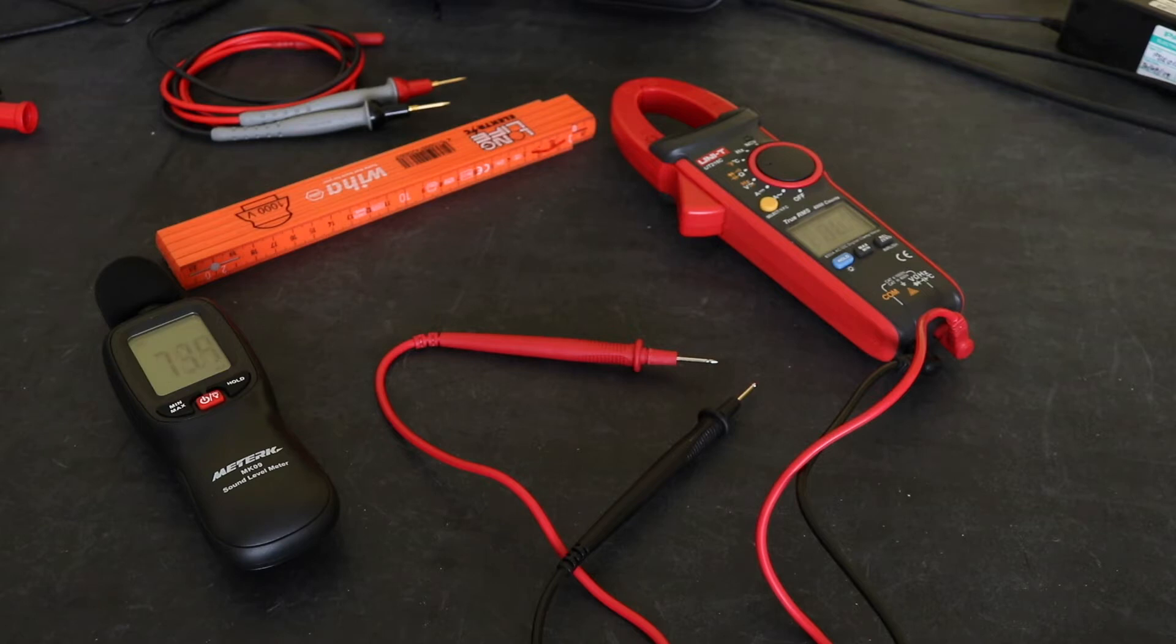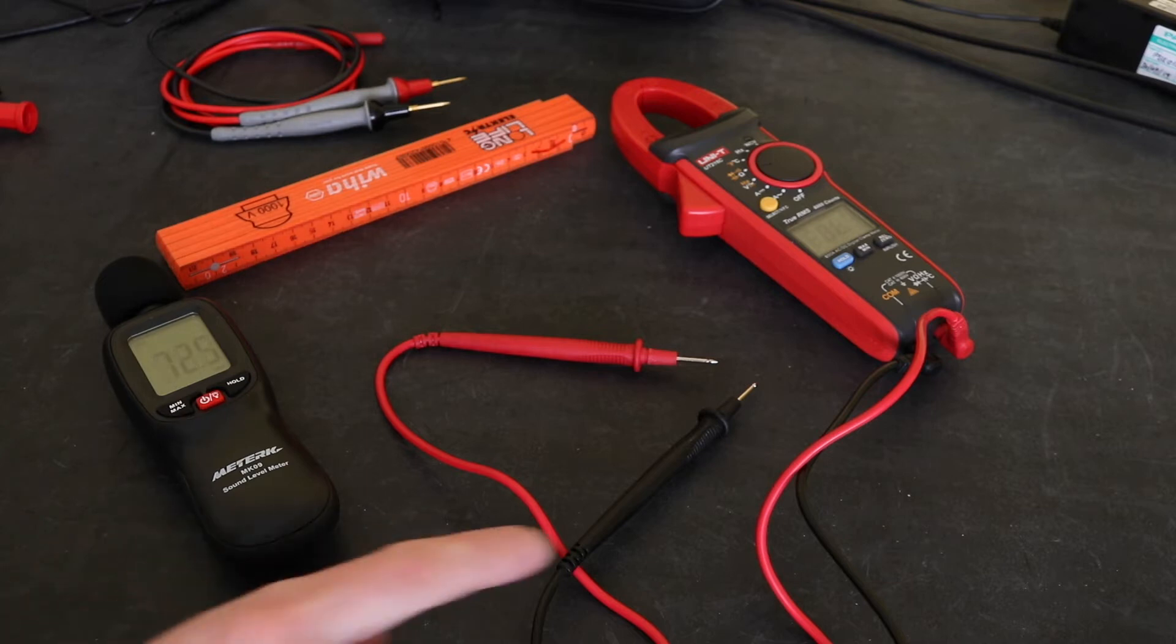I watch a number of other YouTubers who review instruments. Some of them actually use probe master leads which are gold plated to see if it provides an improvement. Didn't have a set of those at the time, but I do now, so I'm going to swap them over and see if we get an improvement on the functionality of the continuity buzzer.